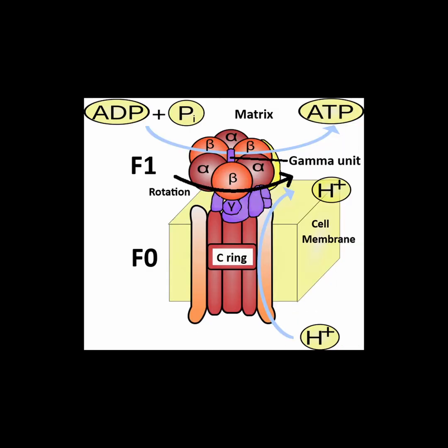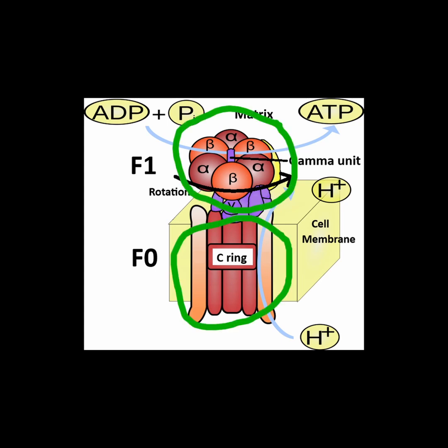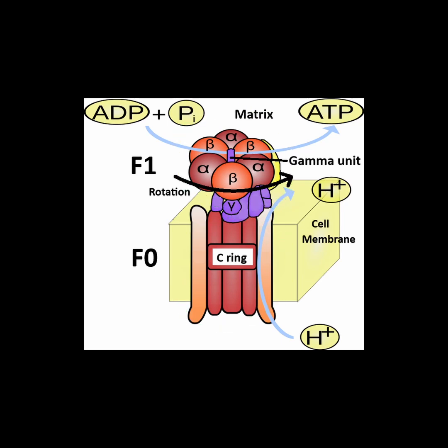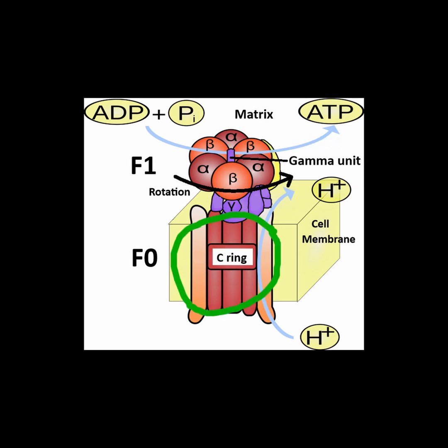This is quite literally a small nanoscale motor. It consists of two multiprotein units that are connected together through a rotor stalk called the gamma unit. The base of the stalk is housed within the inner membrane.